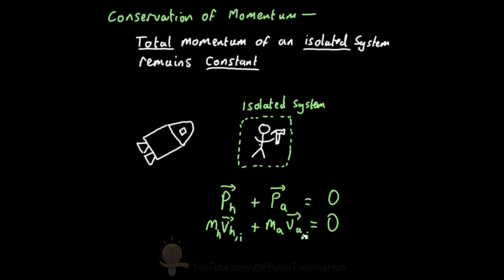Now, if you position yourself so that your back is to the craft and you throw the hammer as hard as you can away from you in this direction, the hammer gains momentum in the direction you throw it. But according to the principle of the conservation of momentum, the total momentum of the system must remain what it was in the initial state — that is, constant between the initial state and the final state.